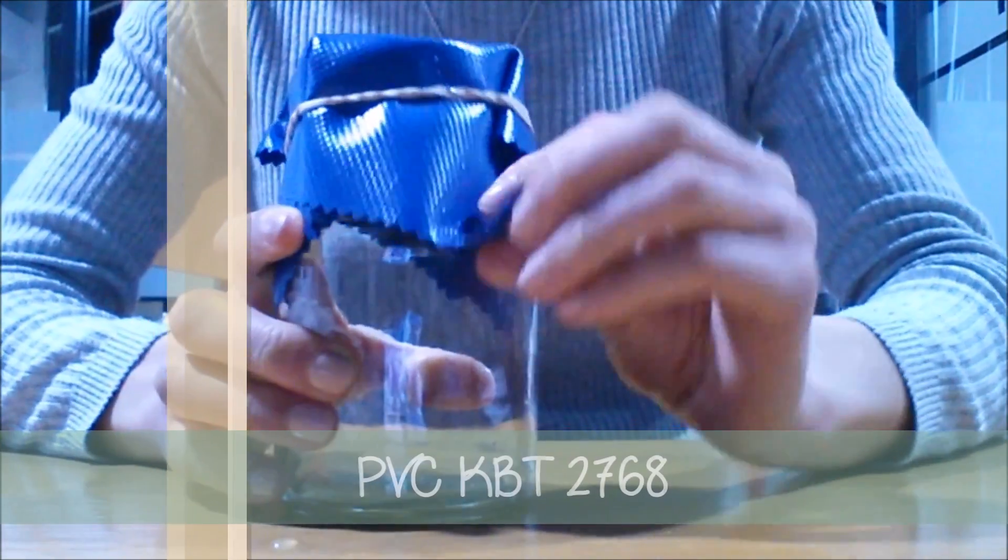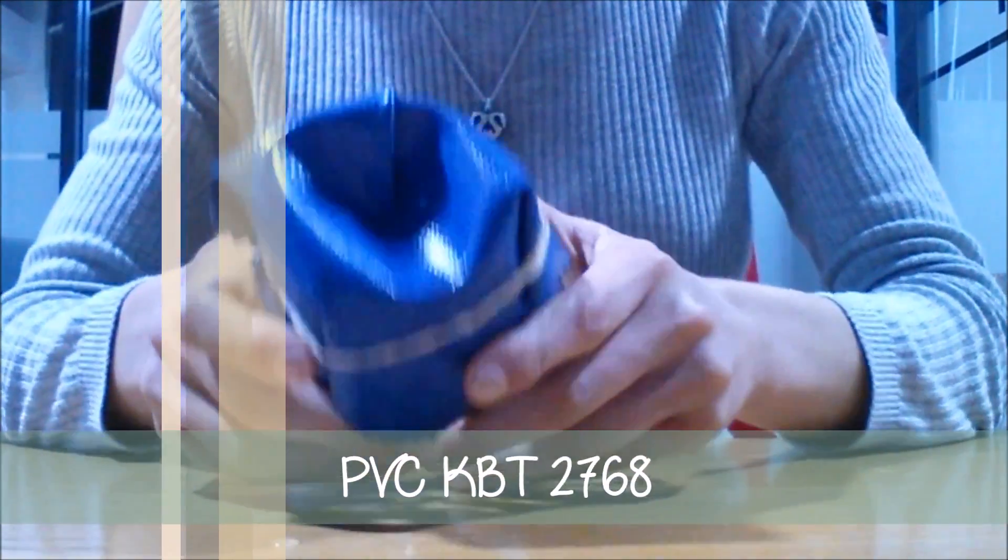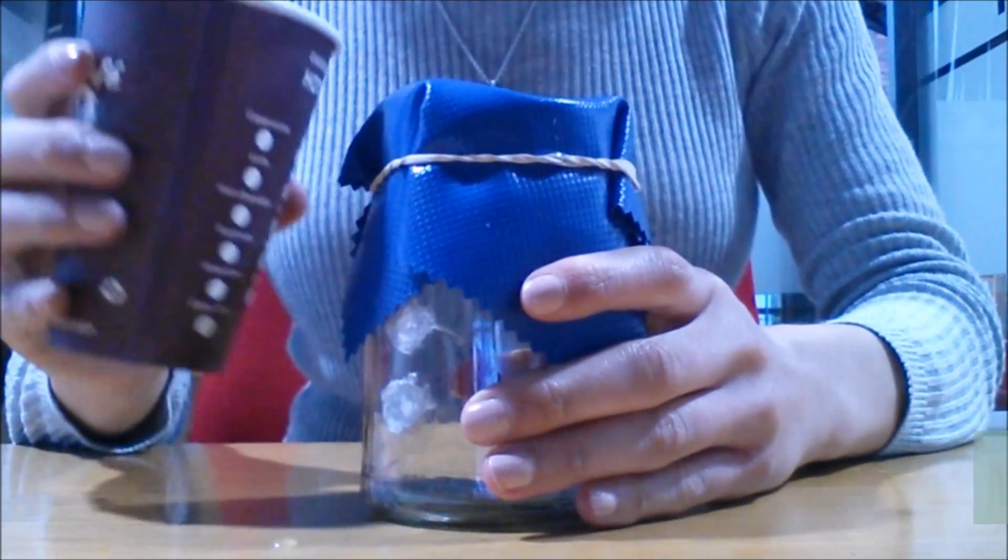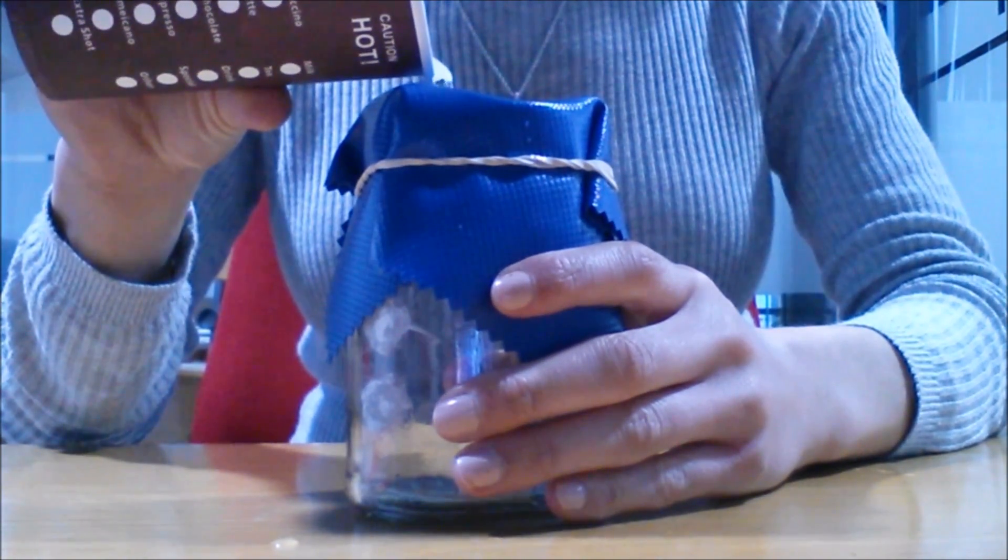PVC, which is polyvinyl chloride, can be manufactured into different types and thicknesses for a range of uses, such as for piping, cable installation, tents, and pencil cases.